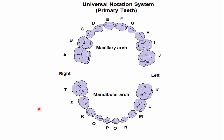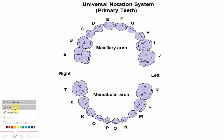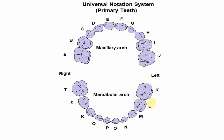What is the alphabet used for this tooth? The alphabets begin from the maxillary second molar of the right side and continue in a clockwise manner. The alphabet used for the left mandibular first molar is L, and continuing in a clockwise direction, the alphabet is S.